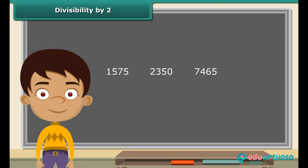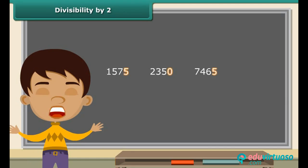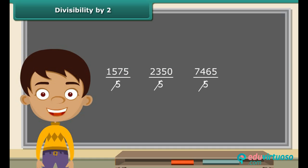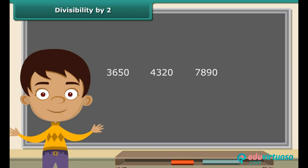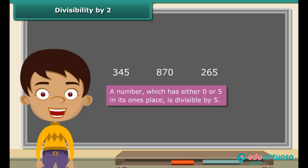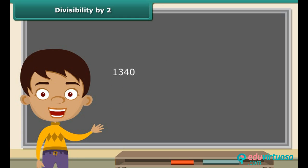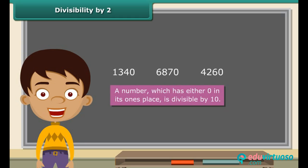Anuj finds it very easy to devise a rule for divisibility by five: any number that ends with a zero or a five is a multiple of five, therefore it is divisible by five. Any number that ends with a zero is a multiple of ten, therefore it is divisible by ten. So any number that contains zero or five in its ones place is divisible by five, and any number that contains zero in its ones place is divisible by ten.